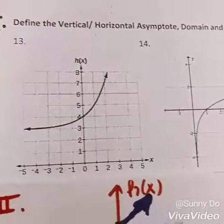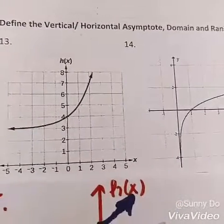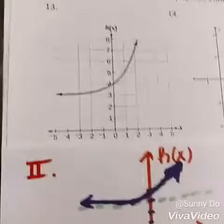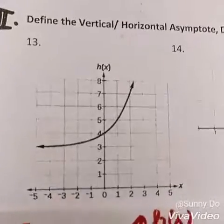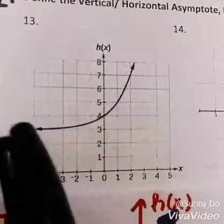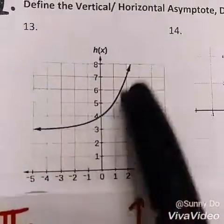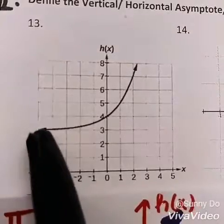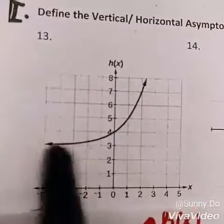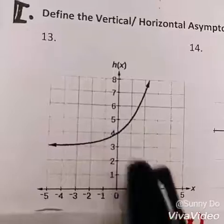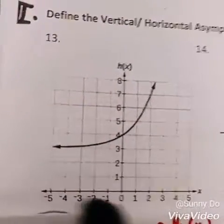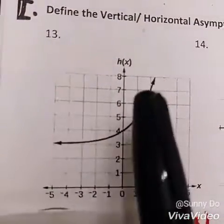Part two asks you to define vertical and horizontal asymptote, domain, and range for the following graph. Here's number one — the graph of h of x looks like this. This one is an exponential graph, it's going up — exponential growth. It's crossing the y-axis at 4, meaning the y-intercept is at 4.